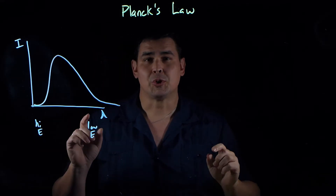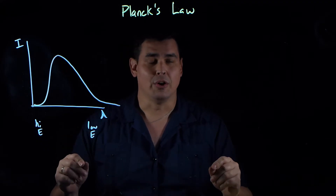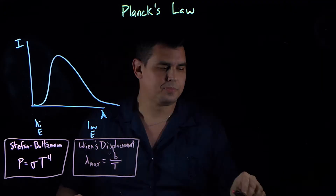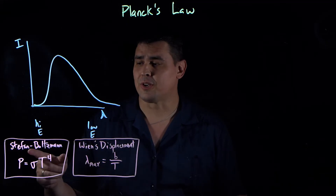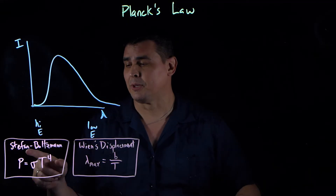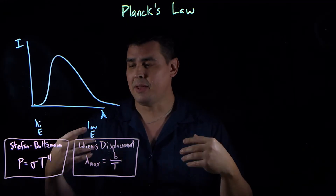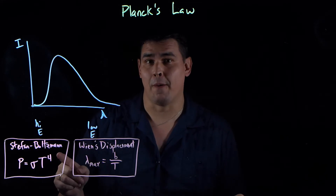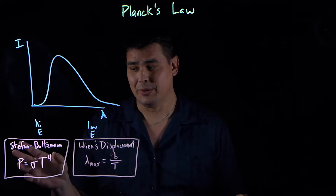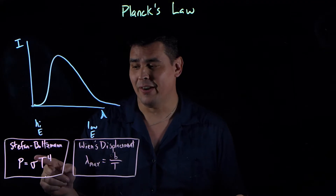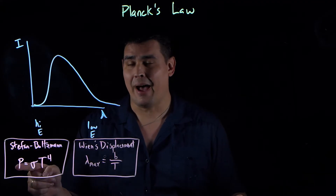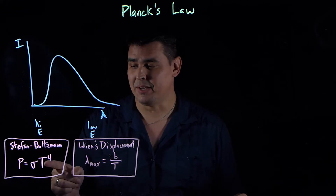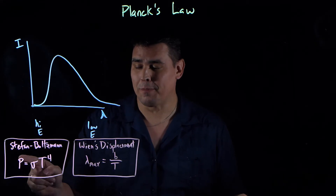There were two laws they knew at the time that worked. The first is called the Stefan-Boltzmann law, which says the power emitted by something is equal to some constant times temperature to the fourth power. So if you double the temperature, the power emitted goes up by 16 — because two to the fourth power is 16.